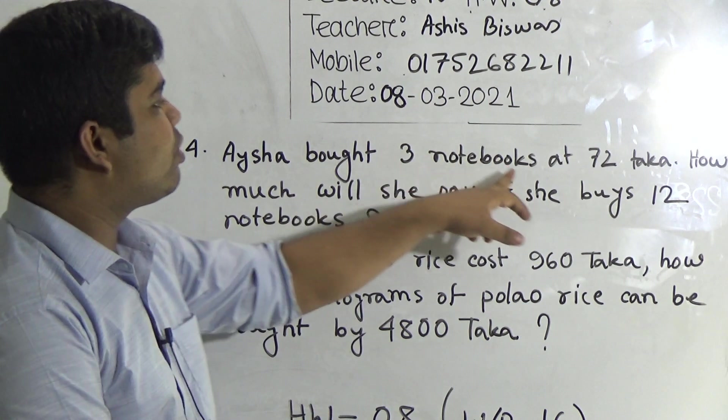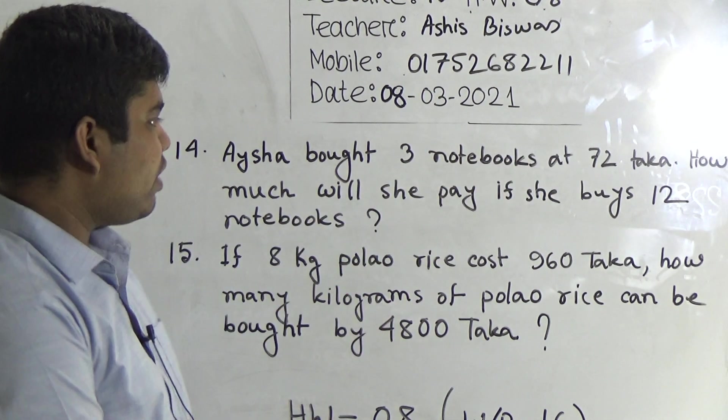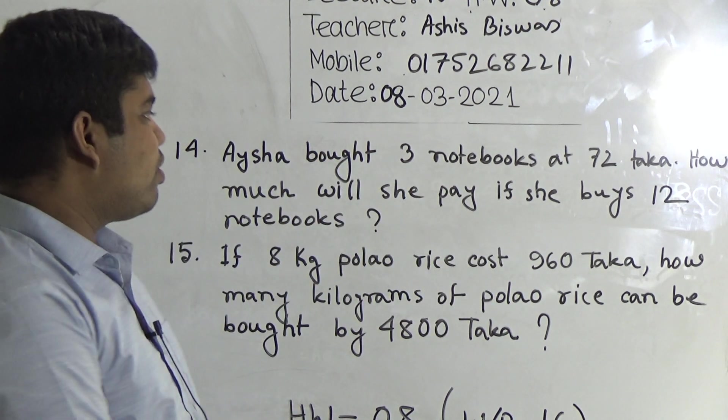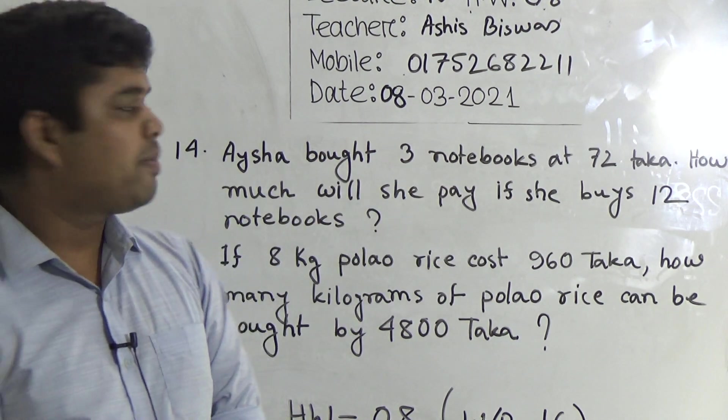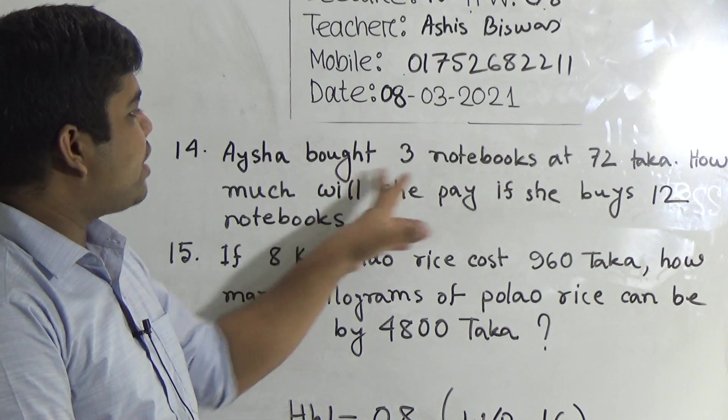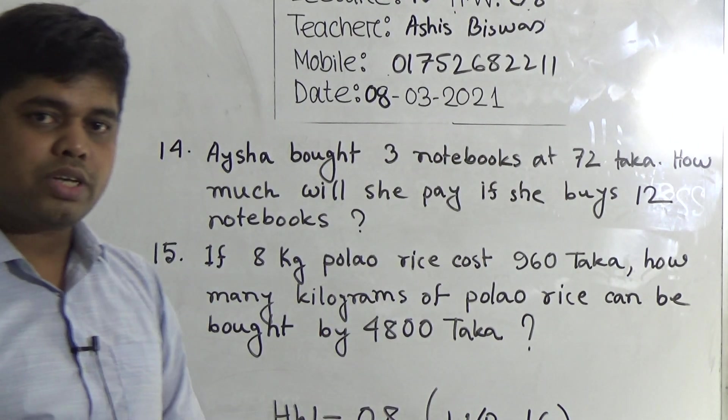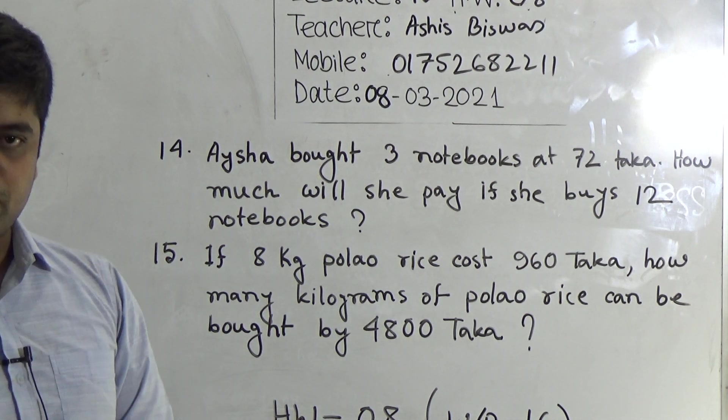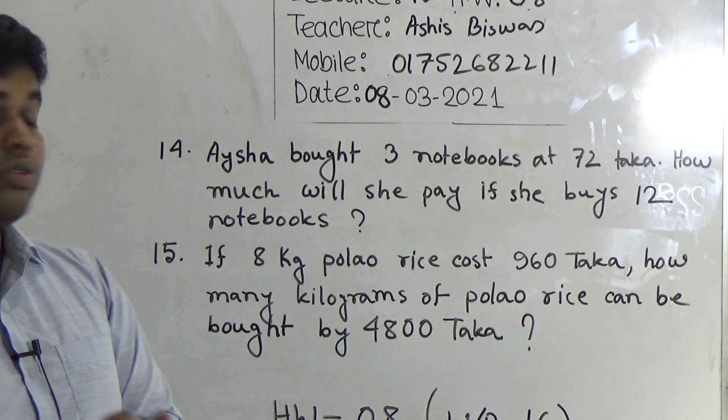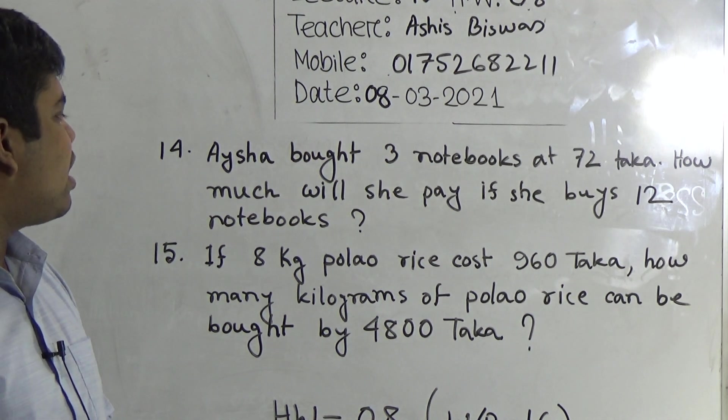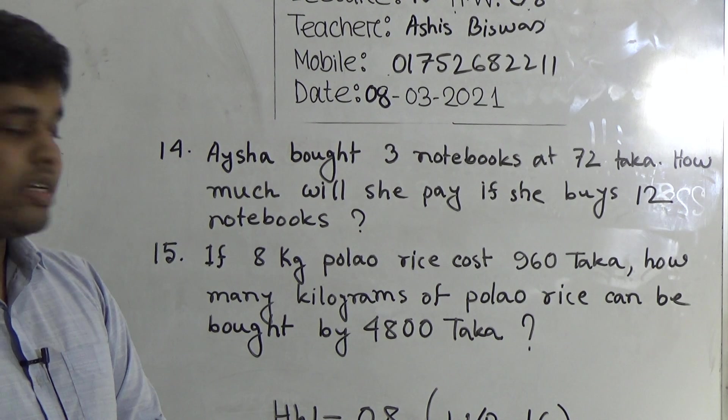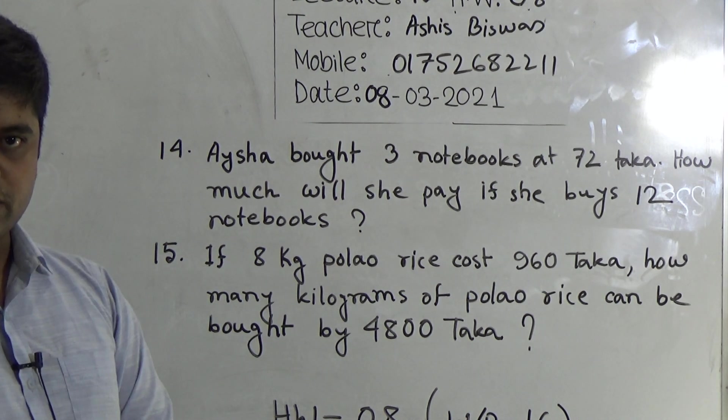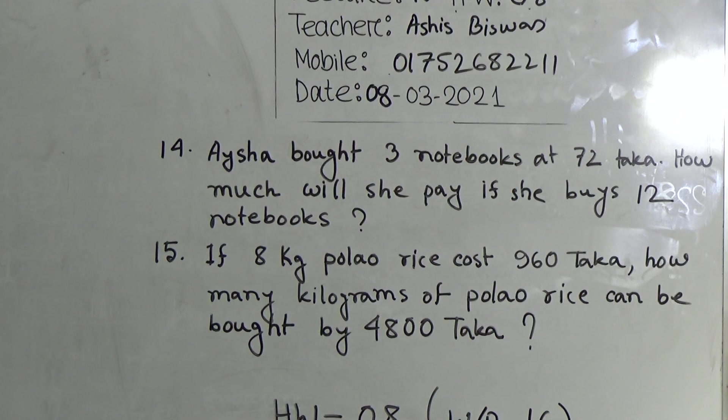That means the price of three notebooks is 72 taka, and we need to find out the price of 12 notebooks. So we use here unitary method. That means, at first we write the price of three notebooks is 72 taka. From that information, we can easily find out the price of one notebook. By finding out one notebook, then we find out the price of 12 notebooks by multiplying 12 with the price of one notebook.